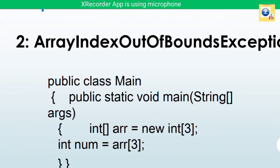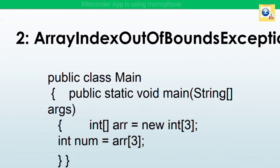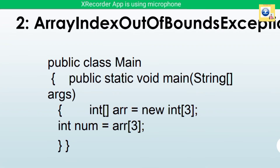A second example is ArrayIndexOutOfBoundsException. This occurs when you try to access an element that does not exist in the array. Here, array 'arr' has a size of three, and we are trying to access index three. Since a size-three array has valid indices 0, 1, and 2, accessing index three means trying to access a fourth element that doesn't exist, causing this runtime error.